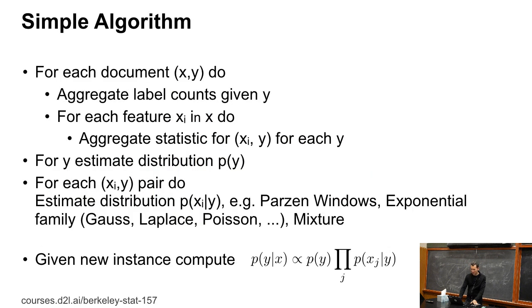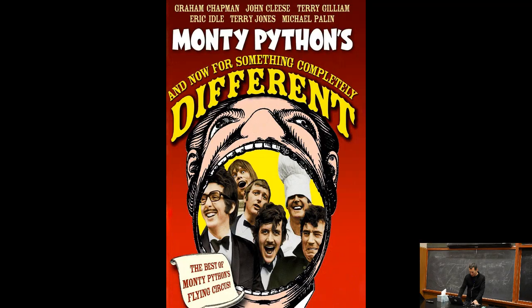Now, as I said, here's a very simple algorithm. For all the documents, aggregate the label counts, aggregate the various counts, and then we'll look at that in code, don't worry.